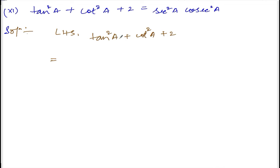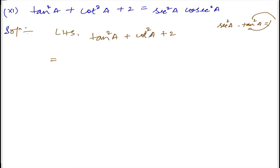Write tan in terms of sec using the formula: sec square a minus tan square a is equal to 1. Transfer tan square a, bring 1 to the other side — it will be sec square a minus 1. So substitute sec square a minus 1 for tan square a.